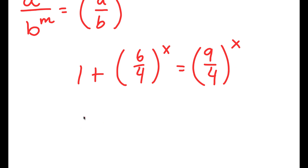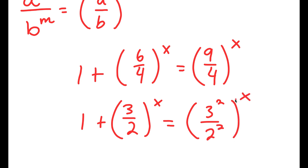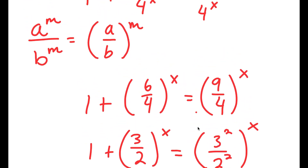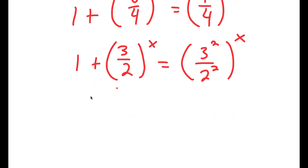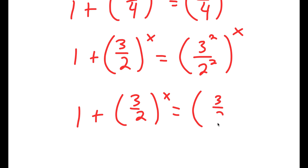Now I can simplify these fractions. So 6 over 4 is equal to 3 over 2, and 9 over 4 I'm going to rewrite as 3 squared over 2 squared. And I can use this property again for 3 squared over 2 squared, so that's going to equal 3 over 2 squared to the power of x.